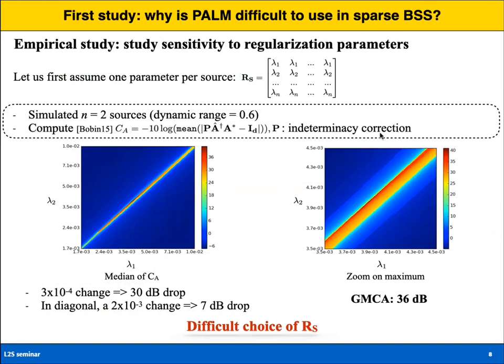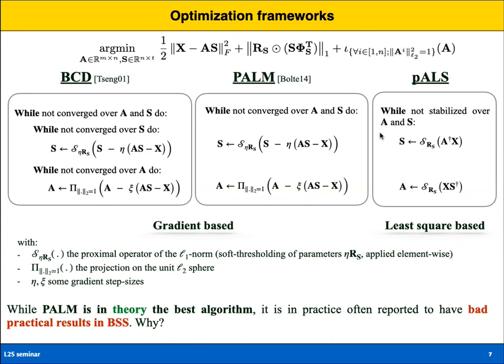Regarding convergence: since this is a non-convex problem, what one can expect is to find a local solution — a critical point. The projected alternating least squares approach is a descent algorithm, but without controlling the step size, one cannot guarantee convergence, as the algorithm could alternate between optimizing over A and S without decreasing the overall cost function — which is why it has no theoretical guarantee.